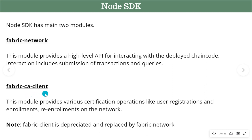The second module, fabric-ca-client, handles mainly the interaction with your CA — your Certificate Authority. If you want to add a new user to your network, register a new user, or enroll a new user, all of those things are handled with the help of this module.